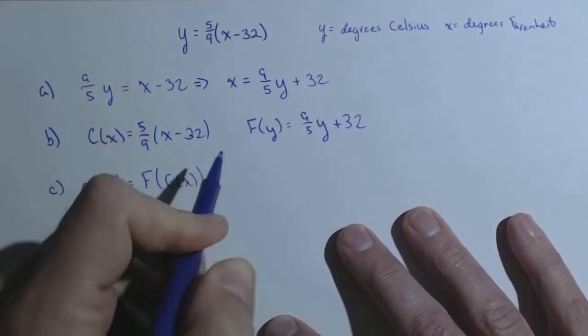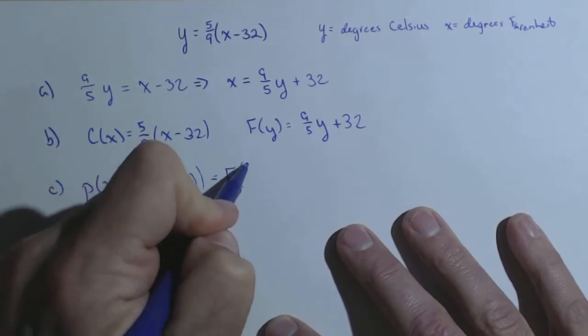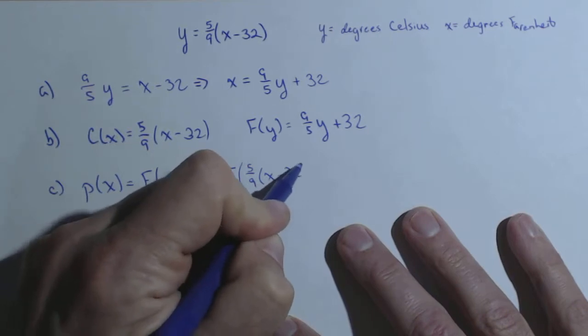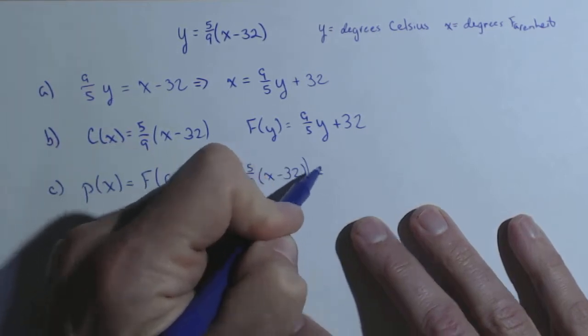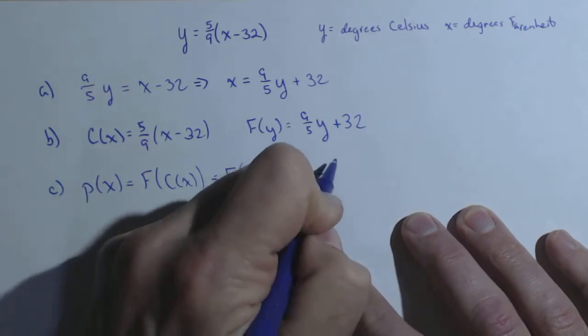which is going to be f of 5 ninths times x minus 32. That's going to go in for the y here into f.